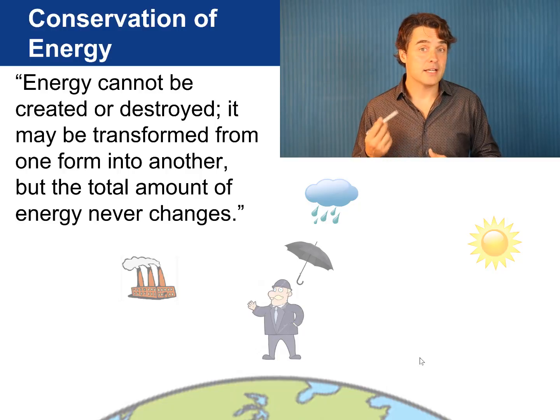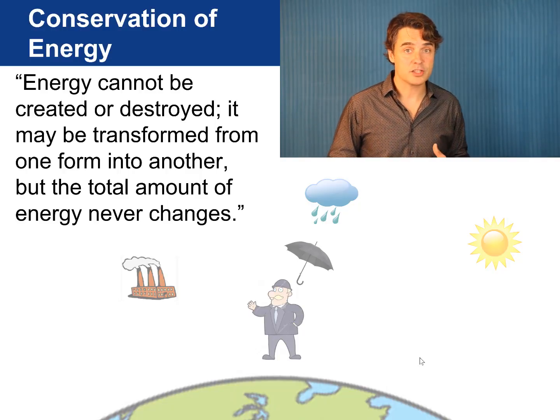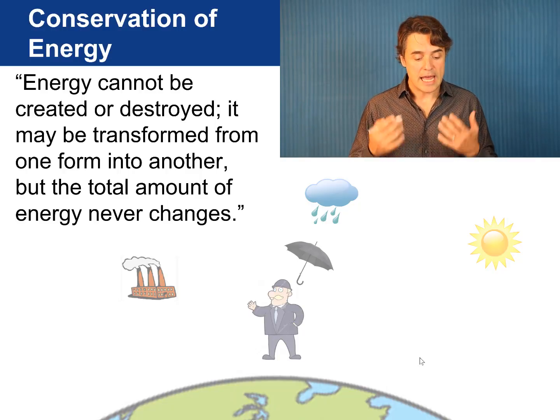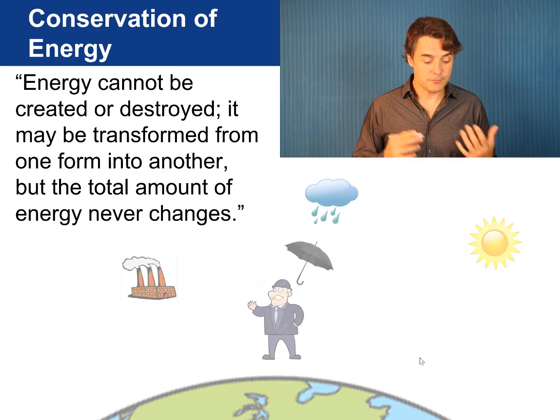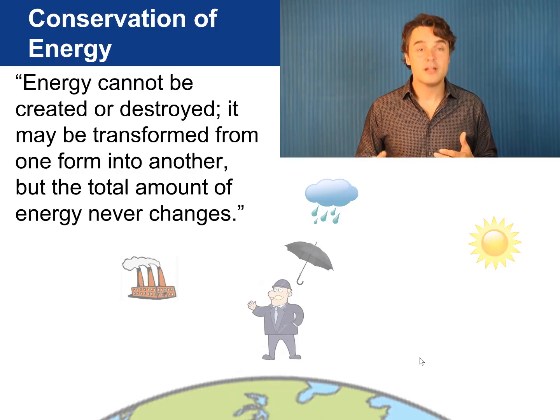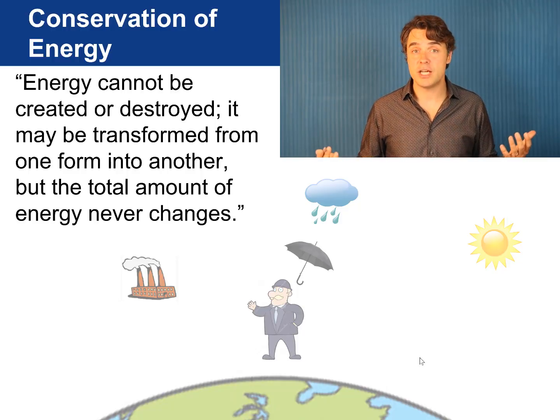Energy is the same way. Physicists believe that energy is conserved in any closed system, meaning that when things happen the energy may shift around and change its appearance but the same amount of energy is always there. An exact statement of the principle of conservation of energy is: energy cannot be created or destroyed, it may be transformed from one form into another, but the total amount of energy never changes.